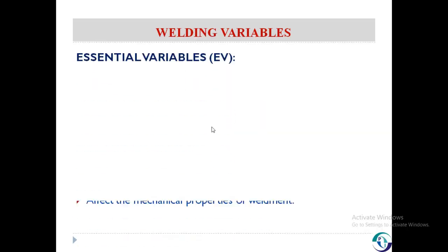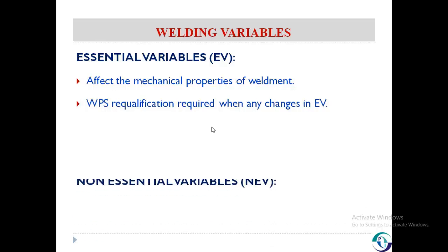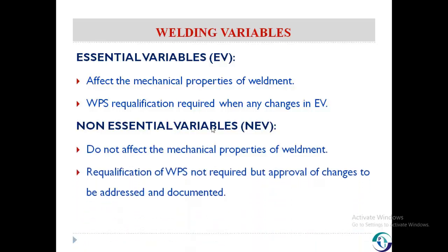The essential variables are those which affect the mechanical properties of the weldment. The WPS requires requalification when there is any change in an essential variable. The non-essential variables are those which do not affect the mechanical properties of the weldment. They do not require requalification of the WPS, but approval of changes must be addressed and documented — meaning if there is any change in a non-essential variable, we don't need to make a test coupon again, but we need to revise the WPS and get approval.